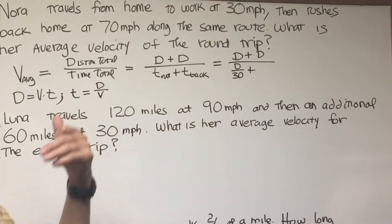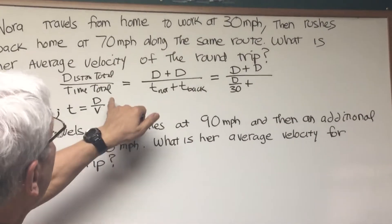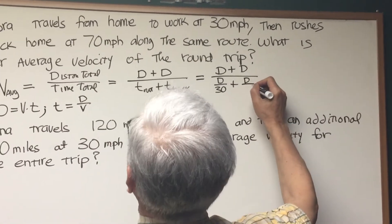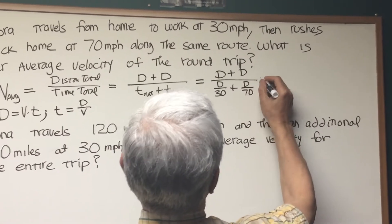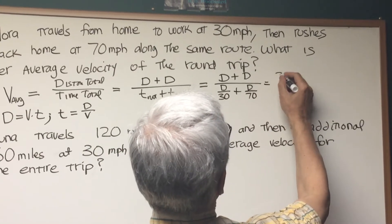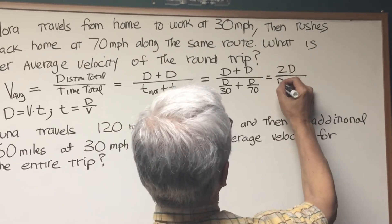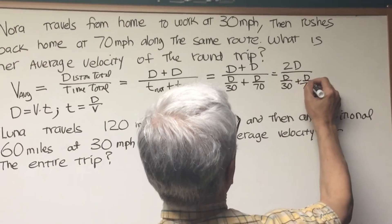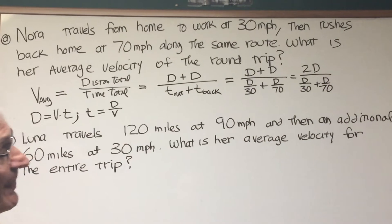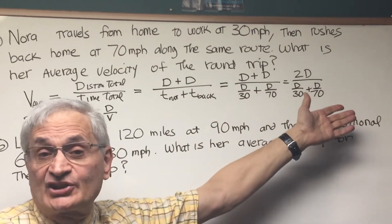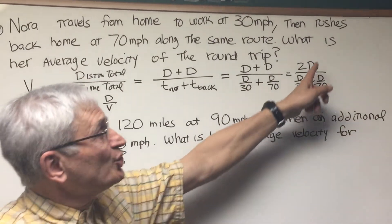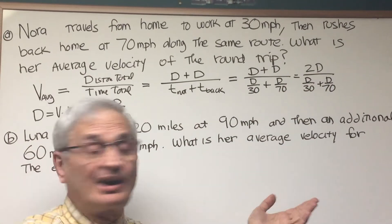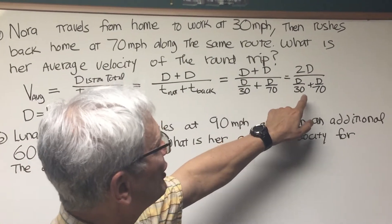The time back is going to be expressed in the same way, distance over velocity, same distance D, but the velocity this time is 70 miles an hour. So what do we have? We have this fraction 2D divided by D over 30 plus D over 70. So what we want to do is, how do we evaluate a fraction like this? We want to multiply numerator and denominator by the least common denominator of all fractions involved, all the internal fractions.